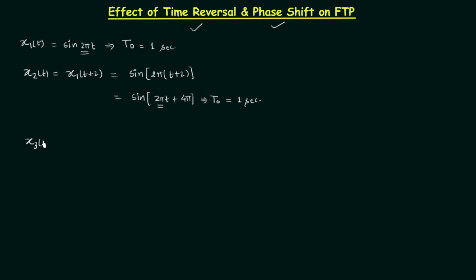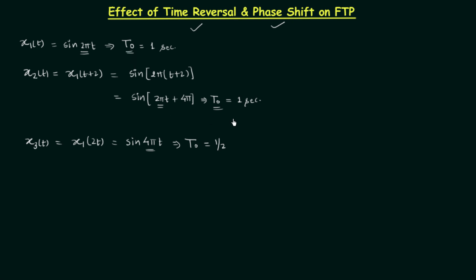After this we had a new signal x3(t) which was equal to x1(2t), and from here we got sin(4πt). ω₀ is not the same now — it is 4π — and t₀ was 1/2. So you can clearly see that in the case of time shifting the fundamental time period is the same, meaning there is no effect of time shifting on the fundamental time period — it is independent of time shifting. But in the case of time scaling we have a new fundamental time period of 1/2 second, which is not the same as the initial one.